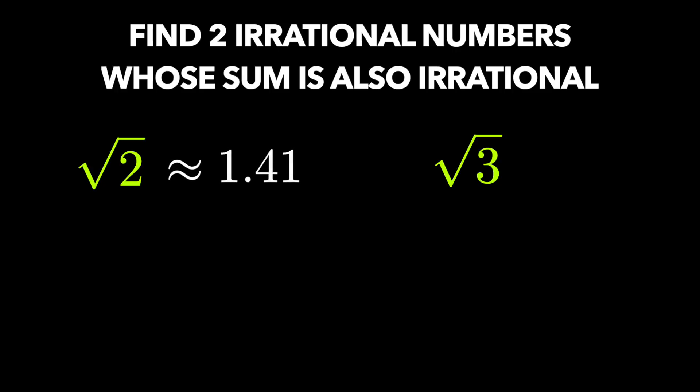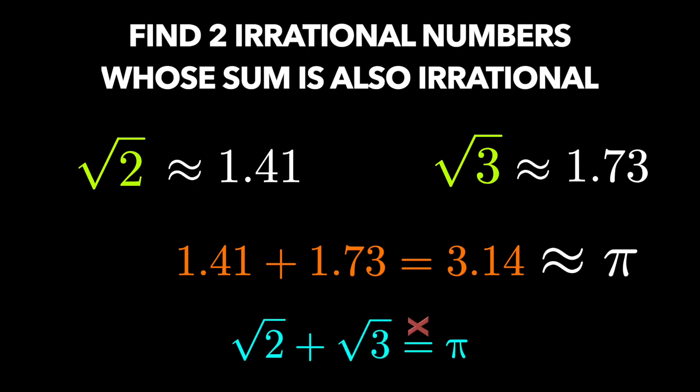root 2 would round to 1.41. Root 3 would round to 1.73. And so 1.41 plus 1.73 is 3.14, which rounds from pi and is irrational.